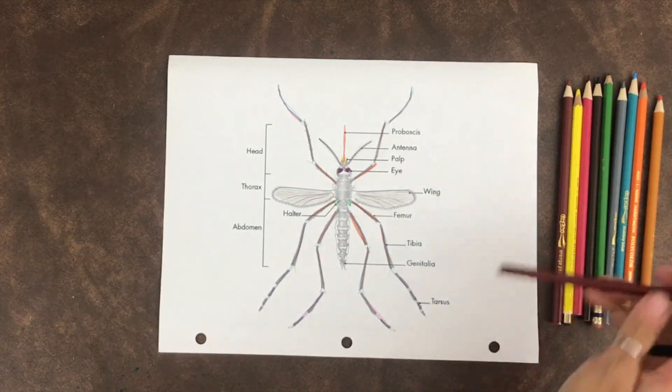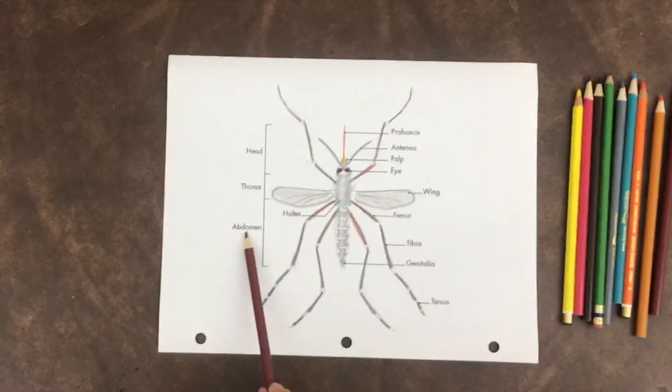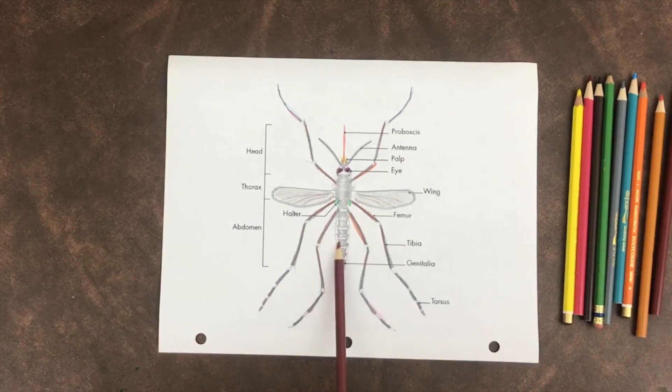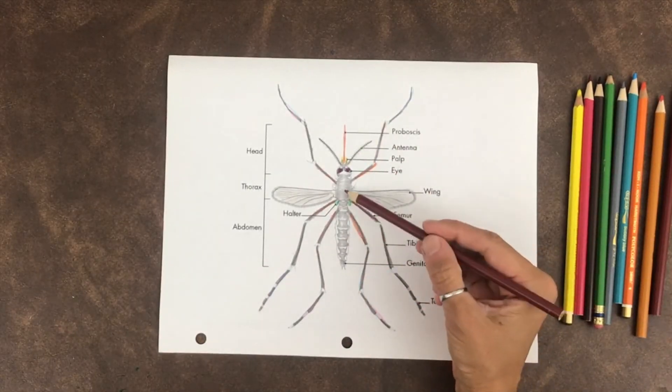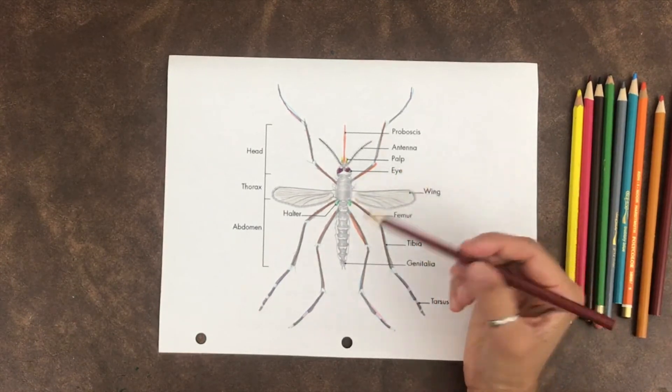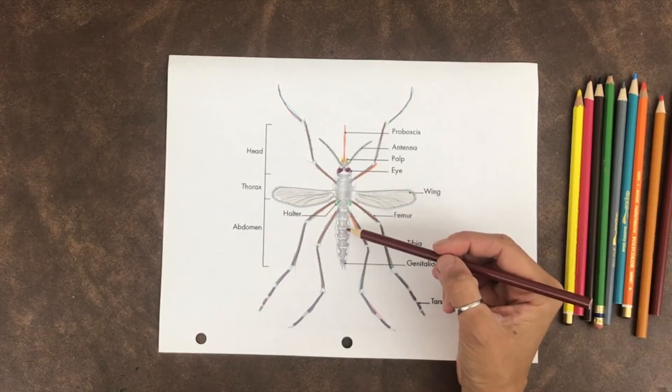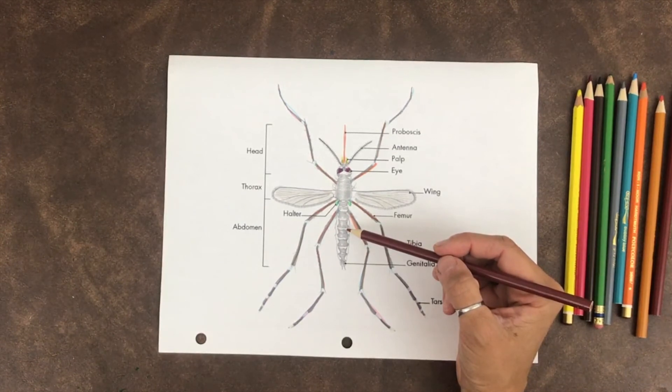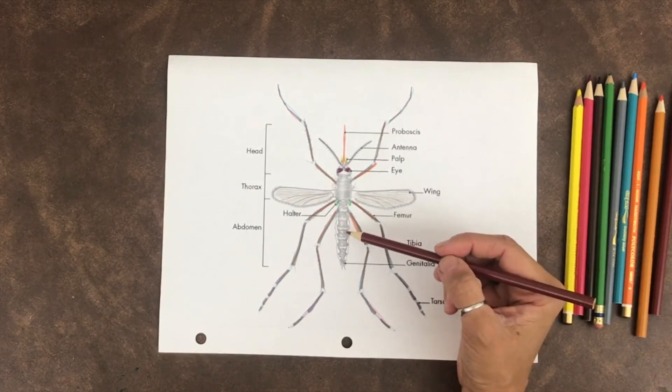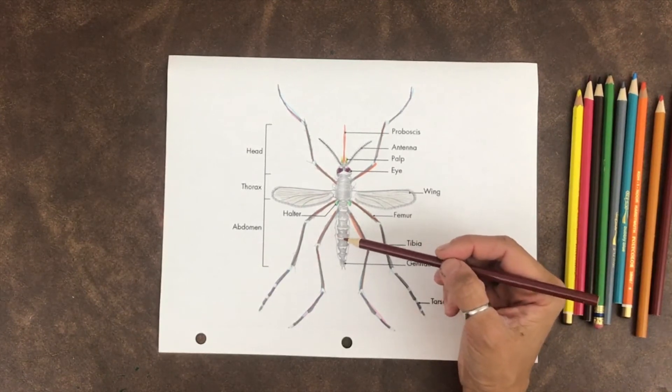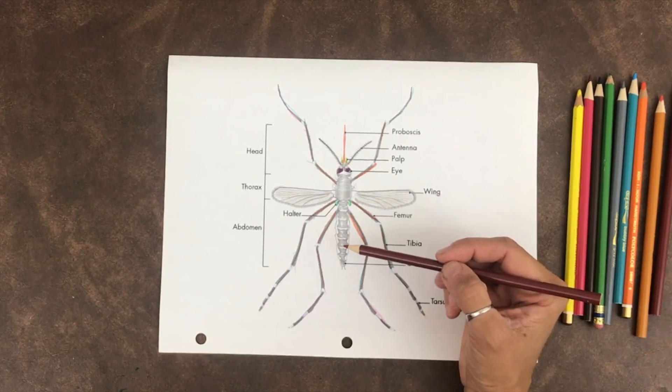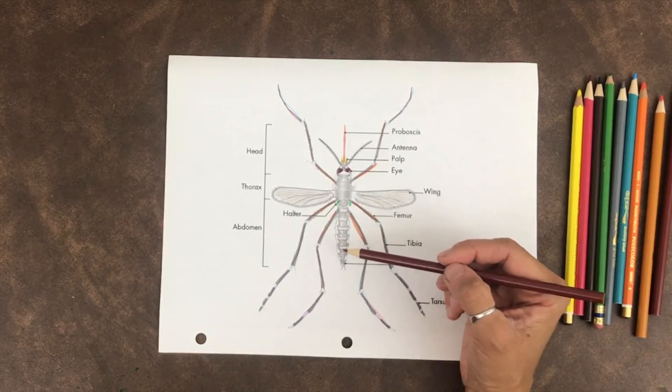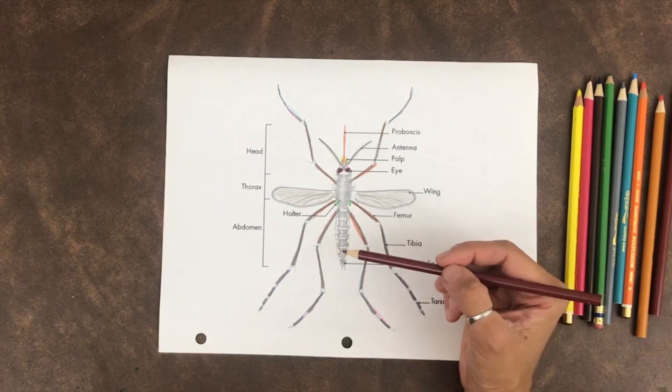Now, moving on to the abdomen. The abdomen connects to the thorax and contains the stomach, the reproductive system, and part of the respiratory system. This is where you'll find the eggs on a female mosquito, the sperm on a male mosquito, and part of how they breathe.